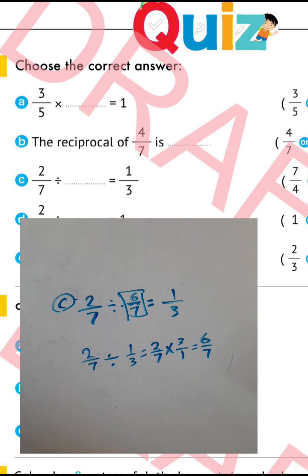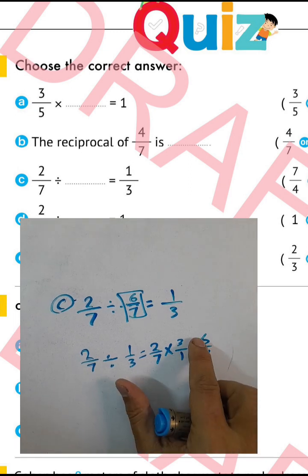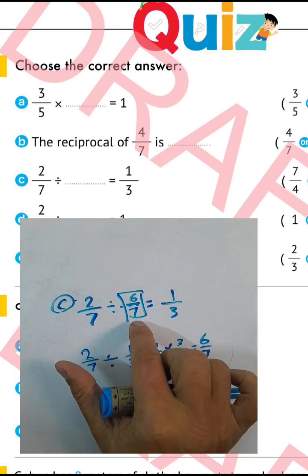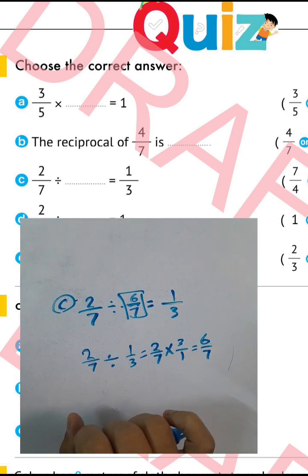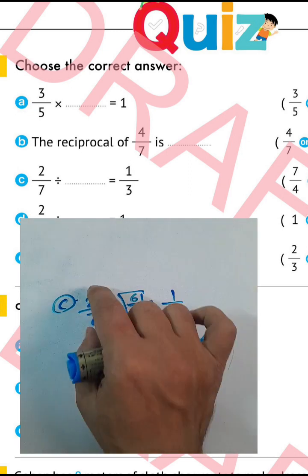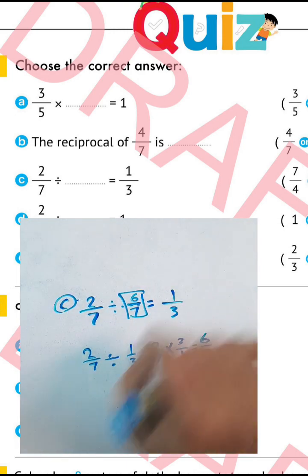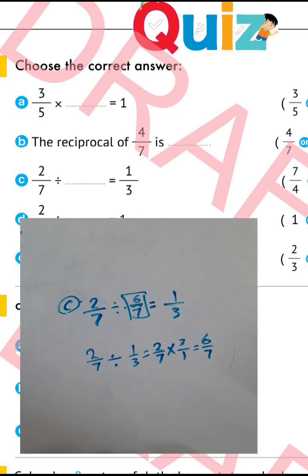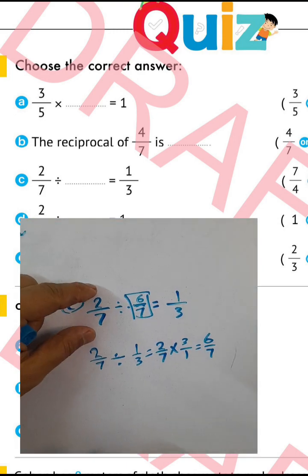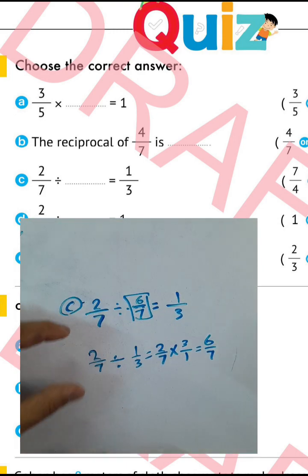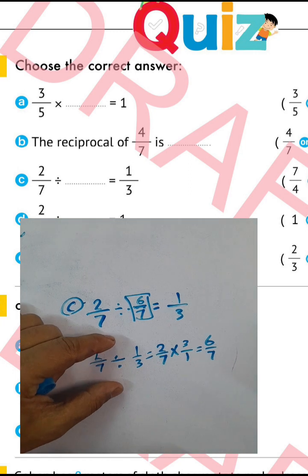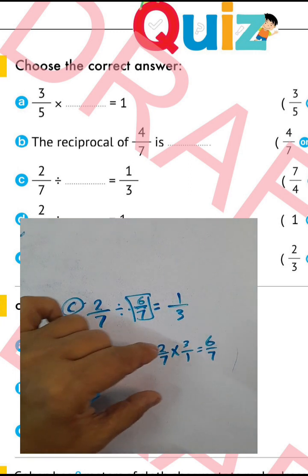Understood. Now six over seven is the divisor. To verify: find dividend divided by quotient. The dividend is two over seven, the quotient is one over three. Divide them by converting from division to multiplication.